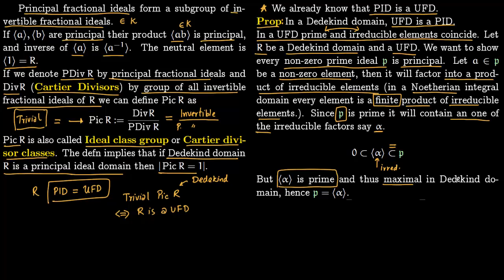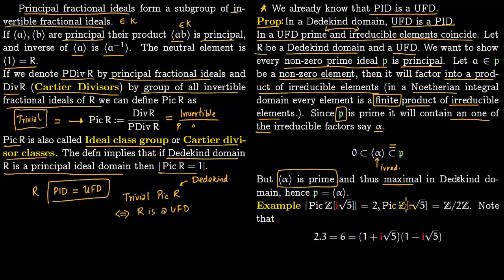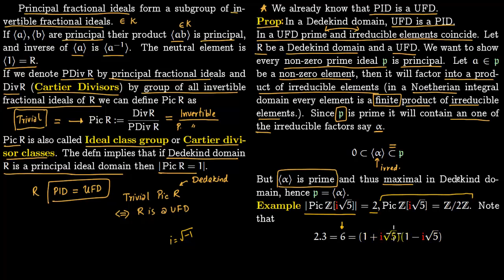Now consider an example with a non-trivial Picard group: Pic(Z[i√5]). This equals Z/2Z, so the group has size 2 and is non-trivial, confirming this ring is not a UFD. Indeed, 6 = 2 × 3 = (1 + i√5)(1 − i√5), giving two distinct factorizations. To compute Picard groups in general one uses the Minkowski bound; once you know how to apply it, there is almost an algorithm for computing Pic(R) for certain rings.